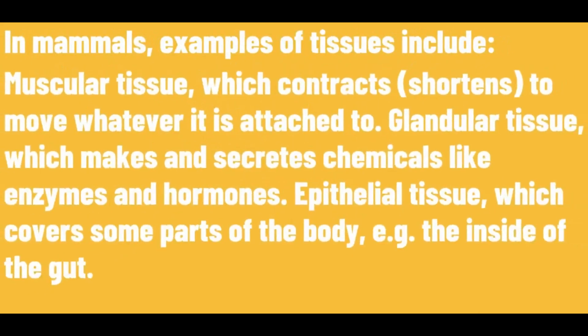In mammals, examples of tissues include muscular tissue, which contracts to move whatever it is attached to; glandular tissue, which makes and secretes chemicals like enzymes and hormones; and epithelial tissue, which covers some parts of the body.